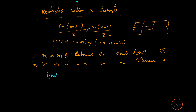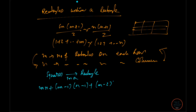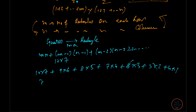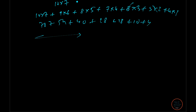Next: the number of squares hidden within a rectangle. The formula is MN + (M−1)(N−1) + (M−2)(N−2) + ... continuing until one dimension runs out. For example, a 10×7 rectangle: 10×7 + 9×6 + 8×5 + 7×4 + 6×3 + 5×2 + 4×1 = 70 + 54 + 40 + 28 + 18 + 10 + 4, and you add those up.